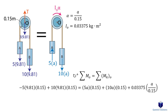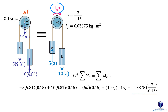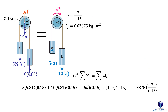We write one moment equation about point O, picking clockwise as positive. On the left side, the weight of each block is multiplied by its perpendicular distance to O. Block A creates a negative moment since it would make the pulley spin counterclockwise, while block B creates a positive moment. On the right side, we have mass times acceleration of each block times the perpendicular distance to O, plus the mass moment of inertia times angular acceleration. Since angular acceleration was already expressed in terms of acceleration, we solve for the acceleration of block A.